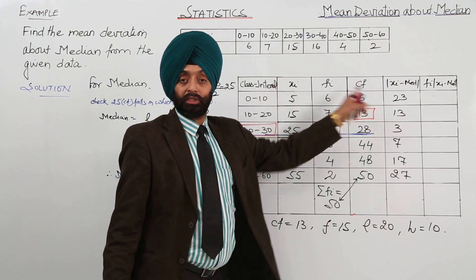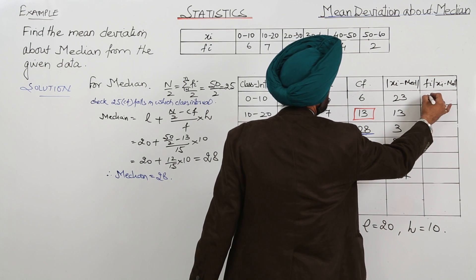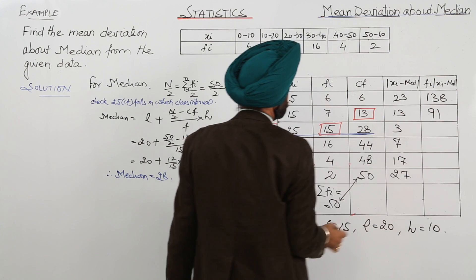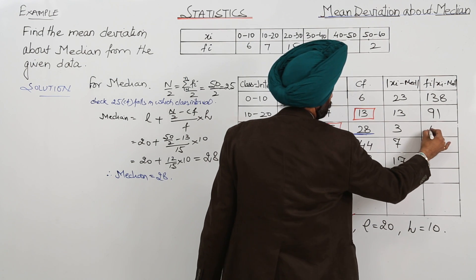Fi with 23: 6 with 23 is 138. 13 times 7 is 91.